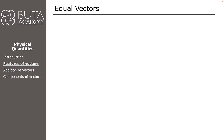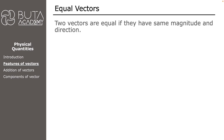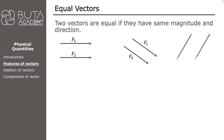If two vectors have the same magnitude and direction they are equal. Each pair of vectors on the screen has the same length and direction, so each pair consists of equal vectors. For all three examples, F1 is equal to F2.